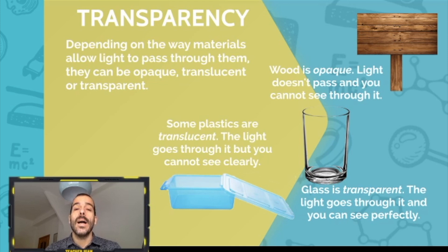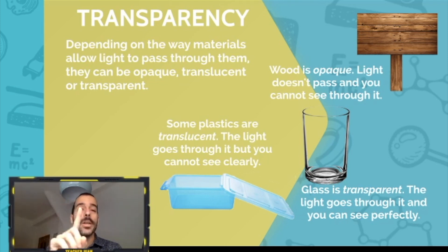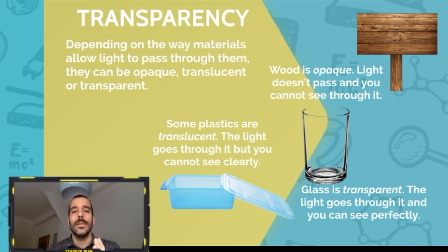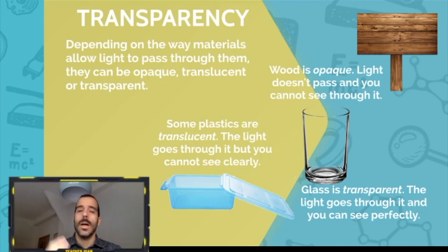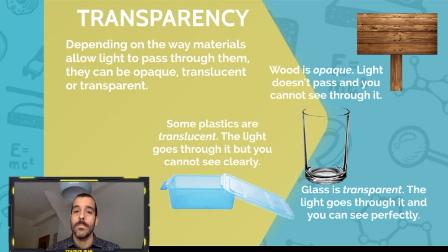This blue tupperware — some plastics are translucent, meaning the light goes through them but you cannot see clearly through them. They are translucent — half transparent, half opaque. Glass is transparent because light goes through and you can see perfectly. Our windows are transparent because we can see what's happening on the other side, and some other types of plastic are transparent too.